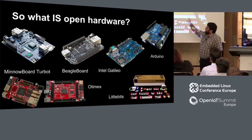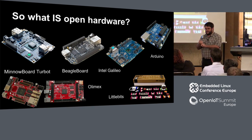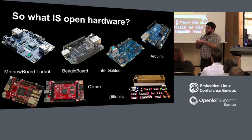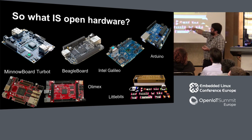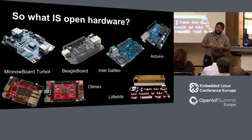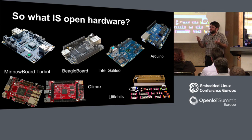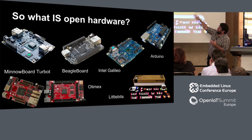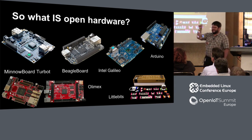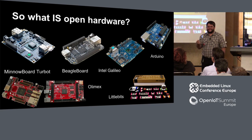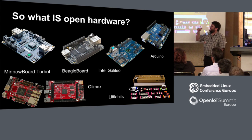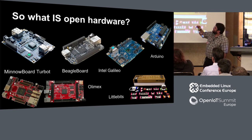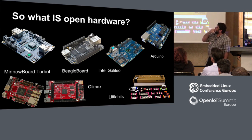All of these boards — you can go and grab the schematics, you can grab the Gerbers, the source code that gets them up and running, download all of this and start playing with it. If you wanted to take an Arduino, an Intel Galileo, or any of these boards, you can grab all of this collateral and start mashing around on it, trying to change things. Maybe you don't want the gigabit Ethernet on the MinnowBoard or the 10/100 Ethernet on the BeagleBoard — delete. Delete is really easy in hardware. Surprisingly, adding things is really hard.